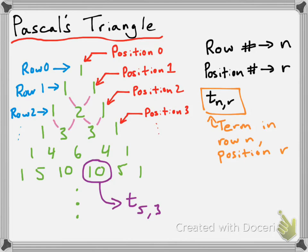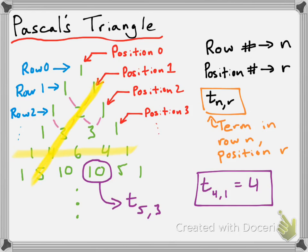We can also start with the unique name for a term and see what the value of that term is. For example, let's suppose I wanted to know the term in row 4, position 1. Row 4, counting down: row 0, 1, 2, 3, 4. Counting from the left: position 0, and the next one will be position 1, which means we are going to have a value of 4 for the term at row 4, position 1. One interesting thing you might notice is that whenever the position number is 1, that actually gives you the row number.